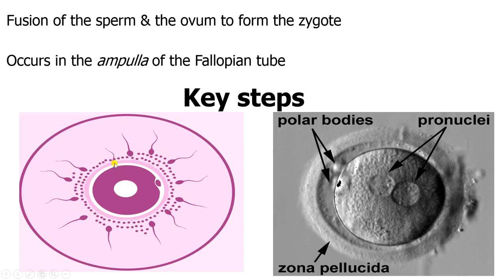Once the sperms are able to find the ovum, the next step is that these millions of sperms will release the acrosomal enzymes to disperse the layer of cells known as the corona radiata. That dispersal is known as the acrosomal reaction. It forms the basis for why we talk about infertility occurring when you have a sperm count less than 20 million.